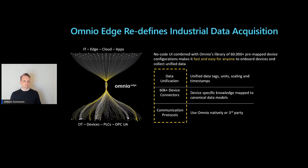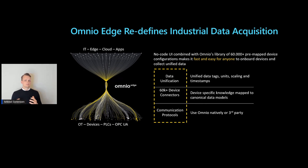Tell us about the Omnio Edge solution — what technical value does it bring to customers? Any industrial IoT project requires good unified data to work. It's plainly the foundation. It's all about converging the OT equipment with the IT side, which can be extremely complex and time-consuming. Omnio Edge is a piece of software that creates a single unified data layer, making it fast and easy to extract unified data from industrial assets.